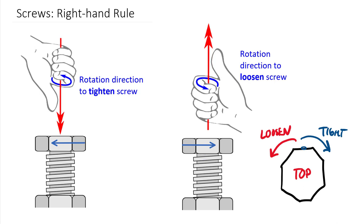This works for all right-hand threaded screws, and both of these examples are right-hand threaded. Greater than 97–98% of screws in the world are right-hand threaded. We really only use left-hand threaded screws when we have to — right-hand is definitely the standard.